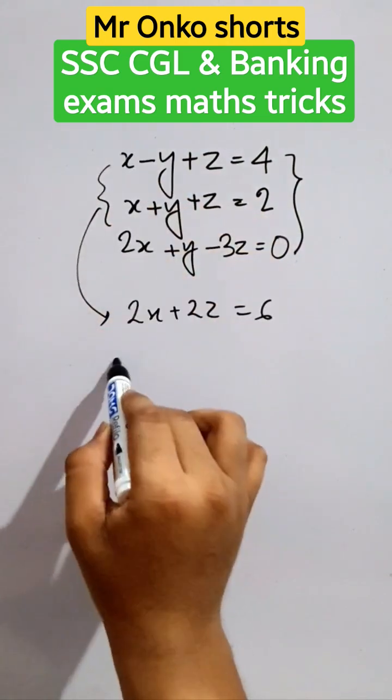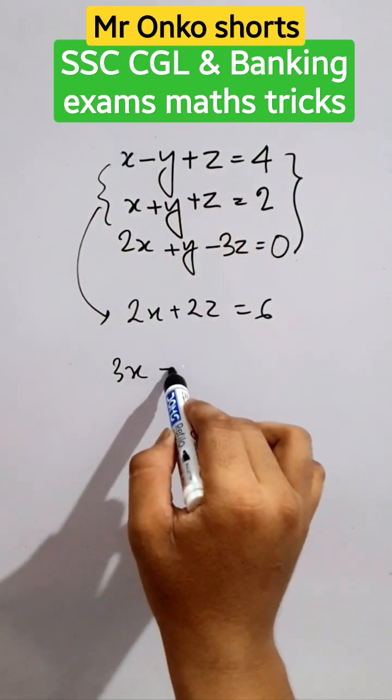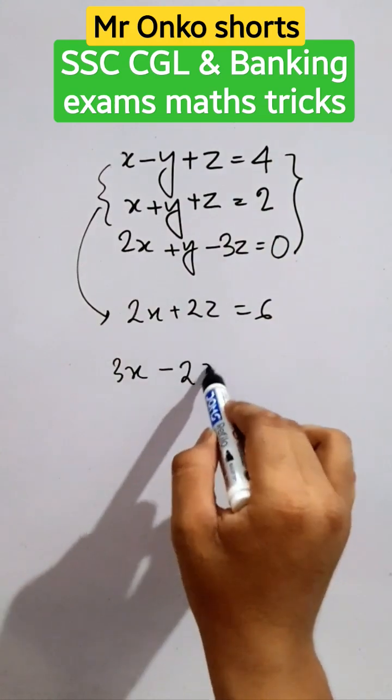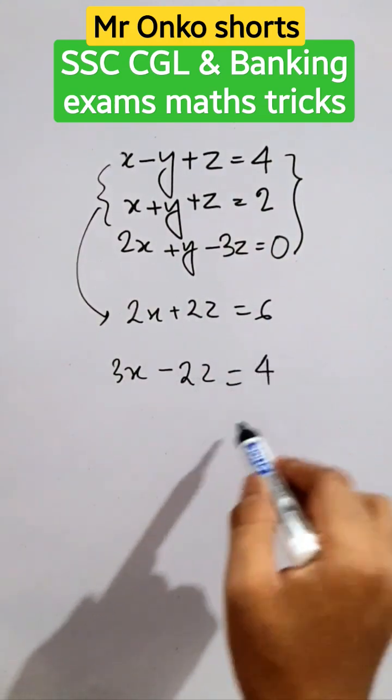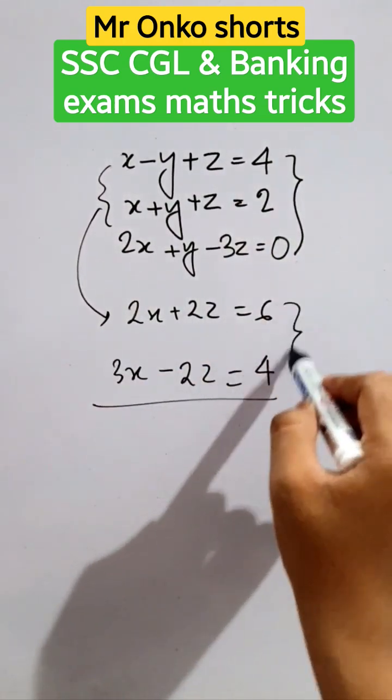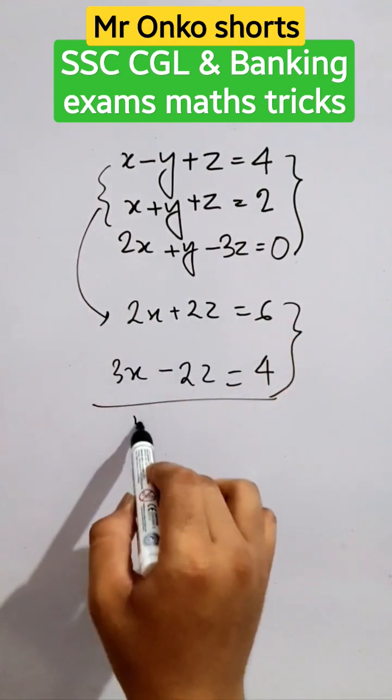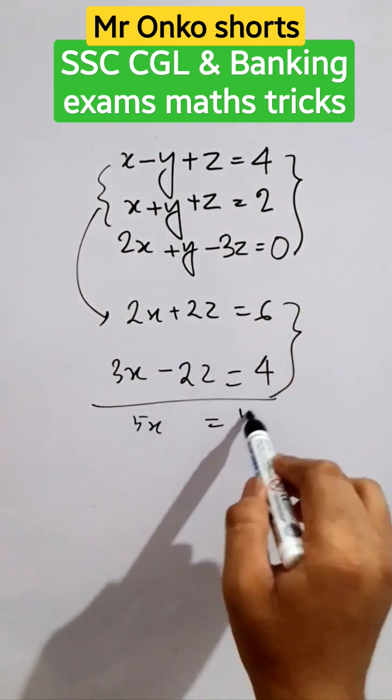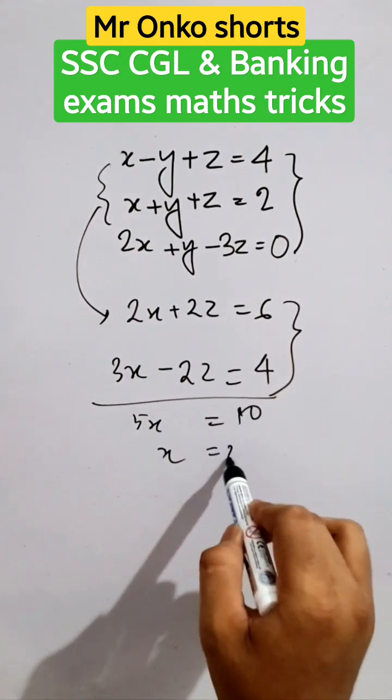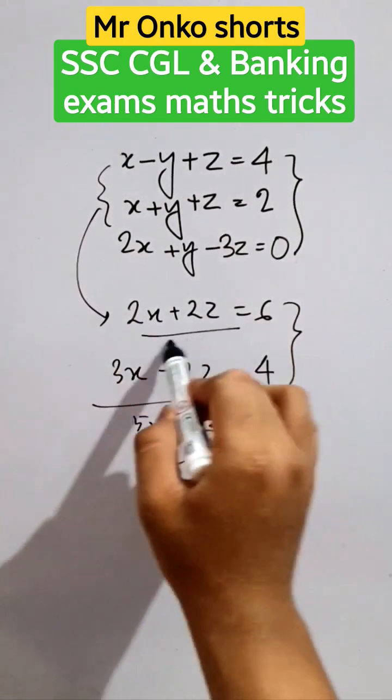In this case, x plus 2x is 3x, minus z minus 3z is minus 2z, equals 4. If we add these two equations, z is eliminated, giving 5x equals 10, so x equals 2. Now substitute x into this equation: x plus z equals 3, so 2x, that is 4, plus 2z equals 6.